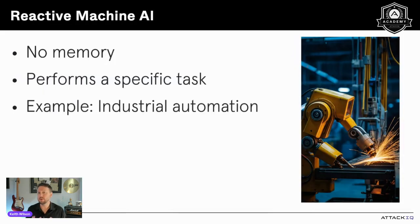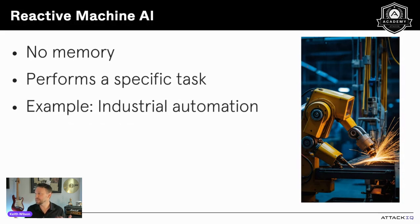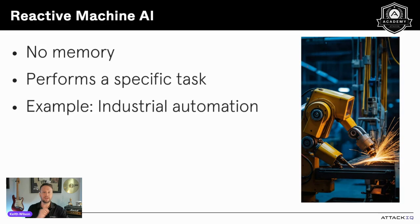Now I want to talk about the four types of AI based on functionality. We'll start with Reactive Machine AI. These are systems with no memory designed to perform a very specific task — often repetitive tasks. You see them a lot in industrial automation, where robots perform specific tasks with precision and speed that human workers can't match. Think of vehicle manufacturing — welding, painting, assembling parts. These use ANI and have a very narrow task they're trained to do, and they do it really well.